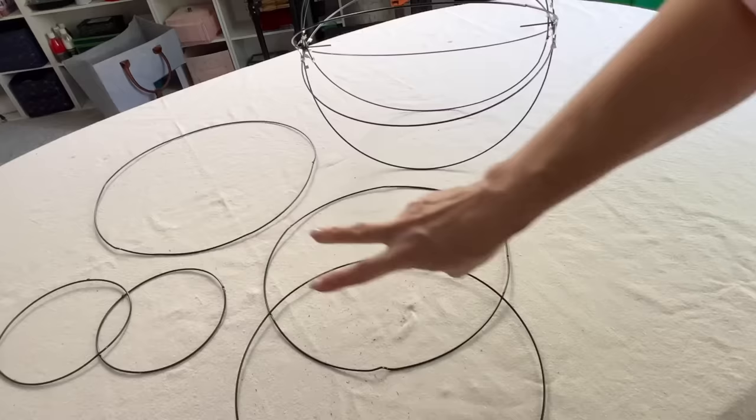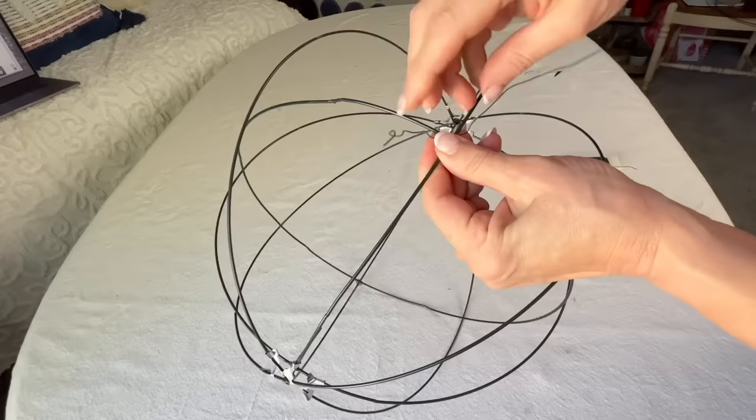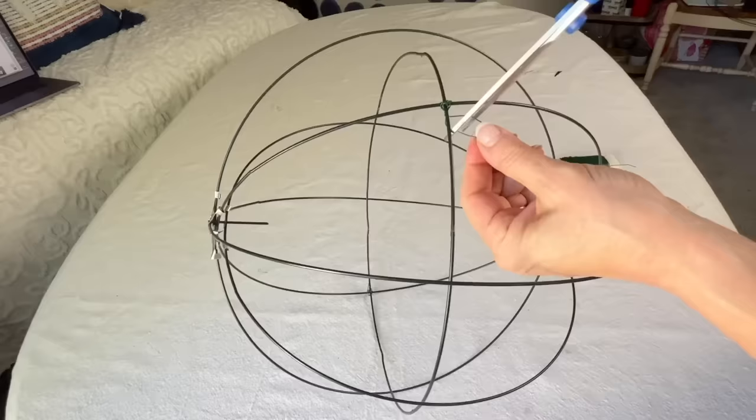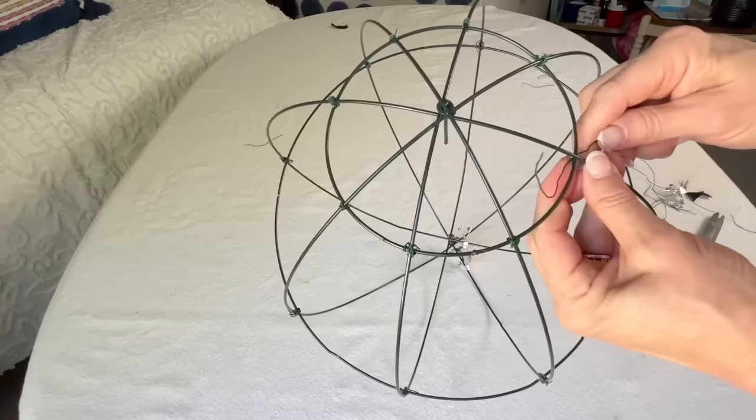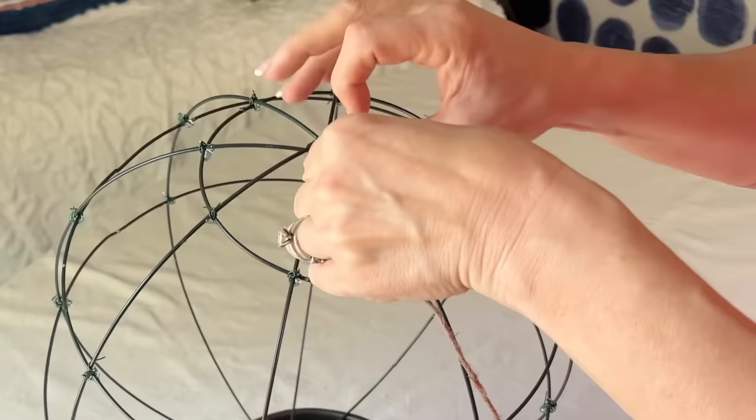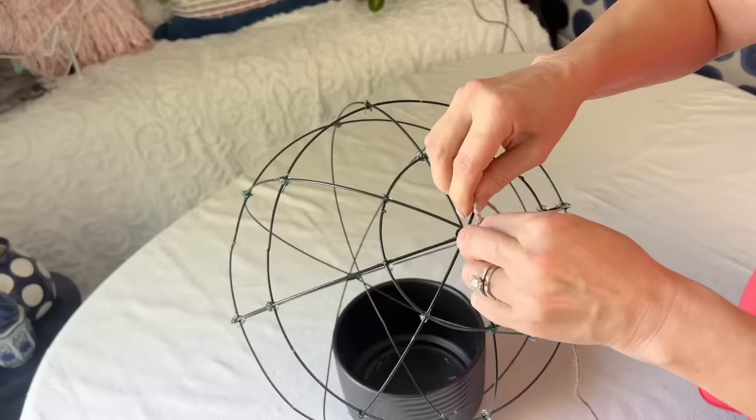Take the second to largest ring and place in the center of the wire globe. Take two of the second to smallest rings and attach them horizontally between the center ring and the bottom of the globe. Take the smallest rings and attach them horizontally to each end of the globe, securing with floral wire.